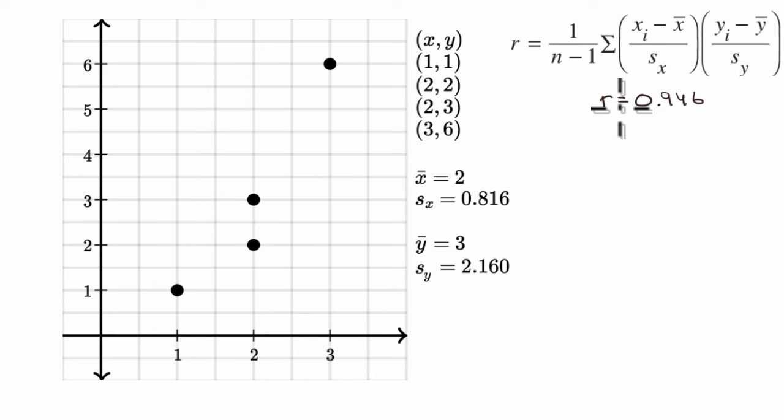And as we said, if r is equal to one, you have a perfect positive correlation. If r is equal to negative one, you have a perfect negative correlation. And if r is equal to zero, you don't have a correlation. But for this particular bivariate data set, we got an r of 0.946, which means we have a fairly strong positive correlation.